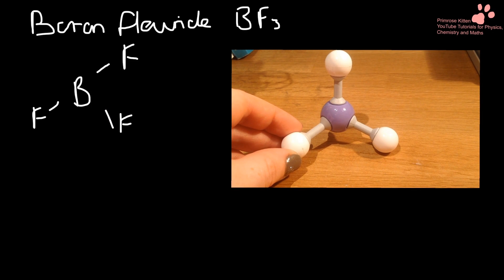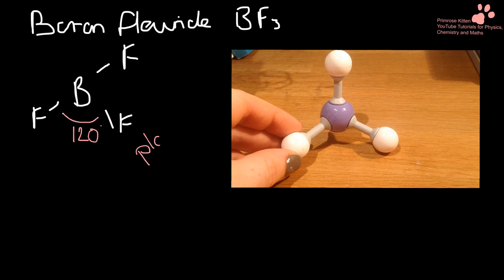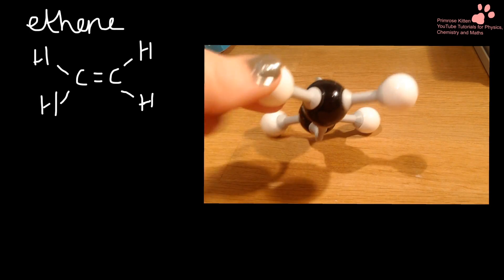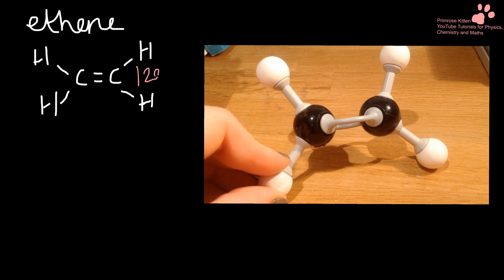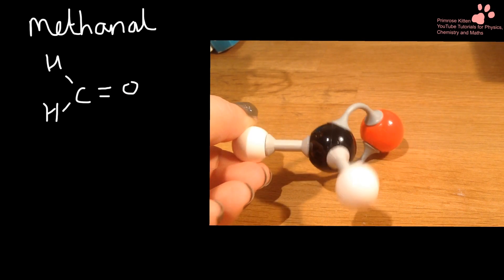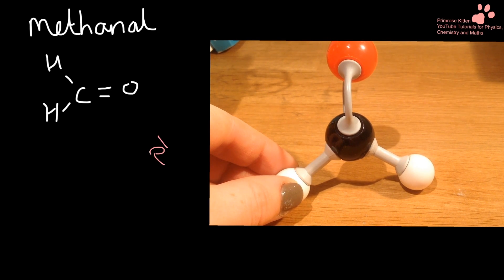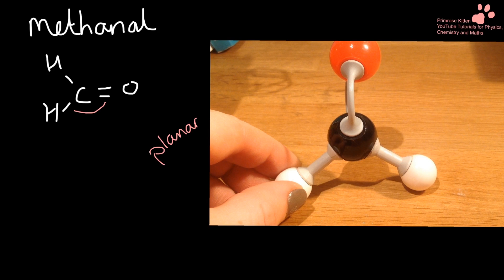Here is boron trifluoride. It is one of those nasty ones that does not obey the octet rule. But it is quite nice to draw because it is planar. So we don't need to draw another diagram for this because it is already there. Its bond angle is 120 degrees. And it is planar. Ethene here. Another nice one that I am not going to redraw because all of the bonds in this are planar. And our planar bonds are 120 degrees. Methanol here. Yet again this is one that is planar so I am not going to redraw it. And all of the bond angles in this are 120 degrees.